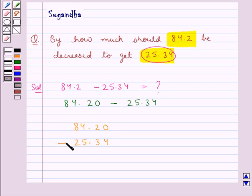Now we can subtract these two numbers as we subtract whole numbers. On subtracting both these numbers we get 5, 8, 8, 6 and we put the decimal point directly under the decimal point of the given numbers.